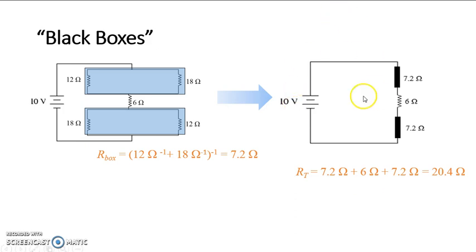Find the total current. 10 volts, 20.4 ohms. When you're done, round to one sig fig. You should get a halfway decent answer of about 0.5 amps. There. Finished.